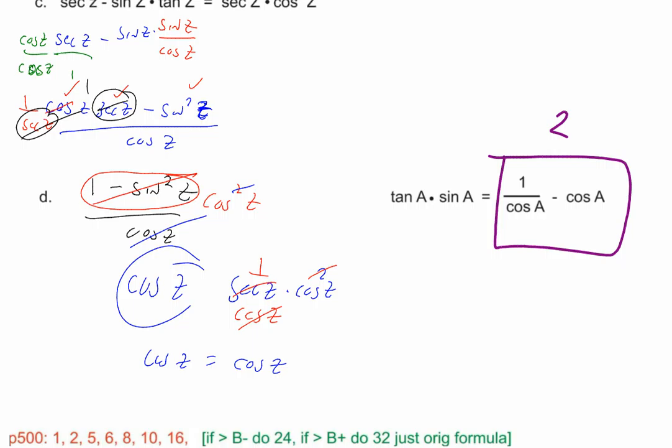You guys need to do problems 1, 2, 5, 6, 8, 10, and 16. B or greater, also do 24. B plus or greater, also include 32. Quiz tomorrow — law of sines, law of cosines, don't forget how to figure out area from what we learned, and then also a trig function or two for some fun.